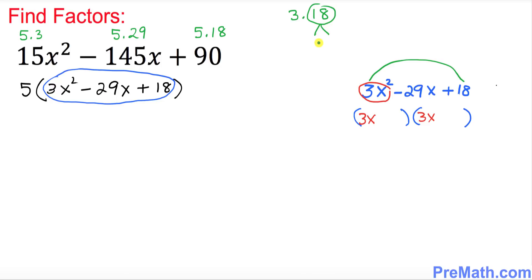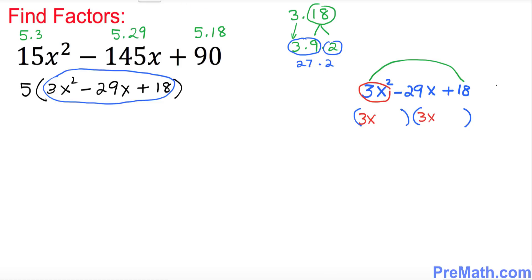So 3 times 18: I can break 18 down as 9 times 2, and we already have a 3. So 3 times 9 becomes 27, and then times 2. You can see that 27 and 2 gives you the middle coefficient, which is 29.